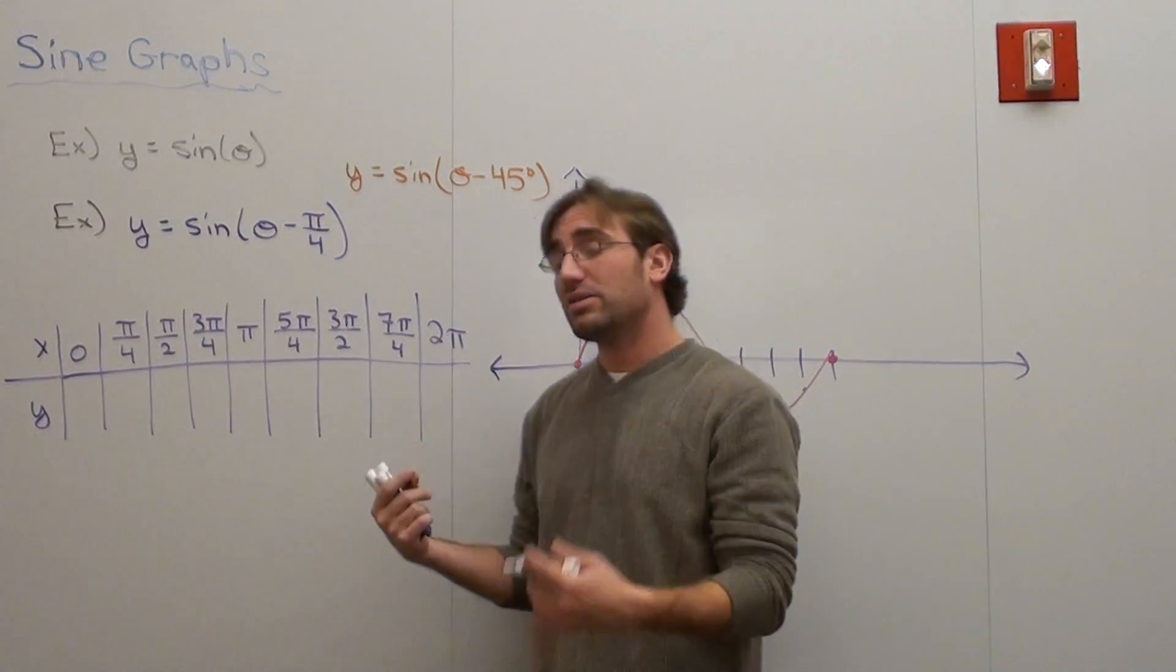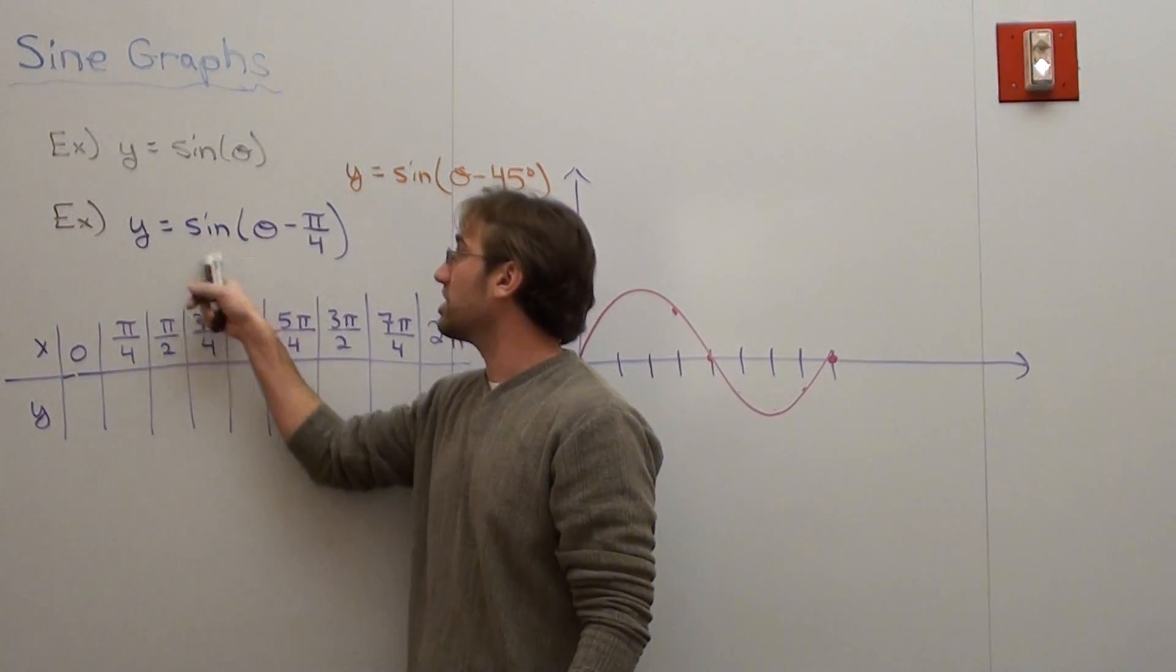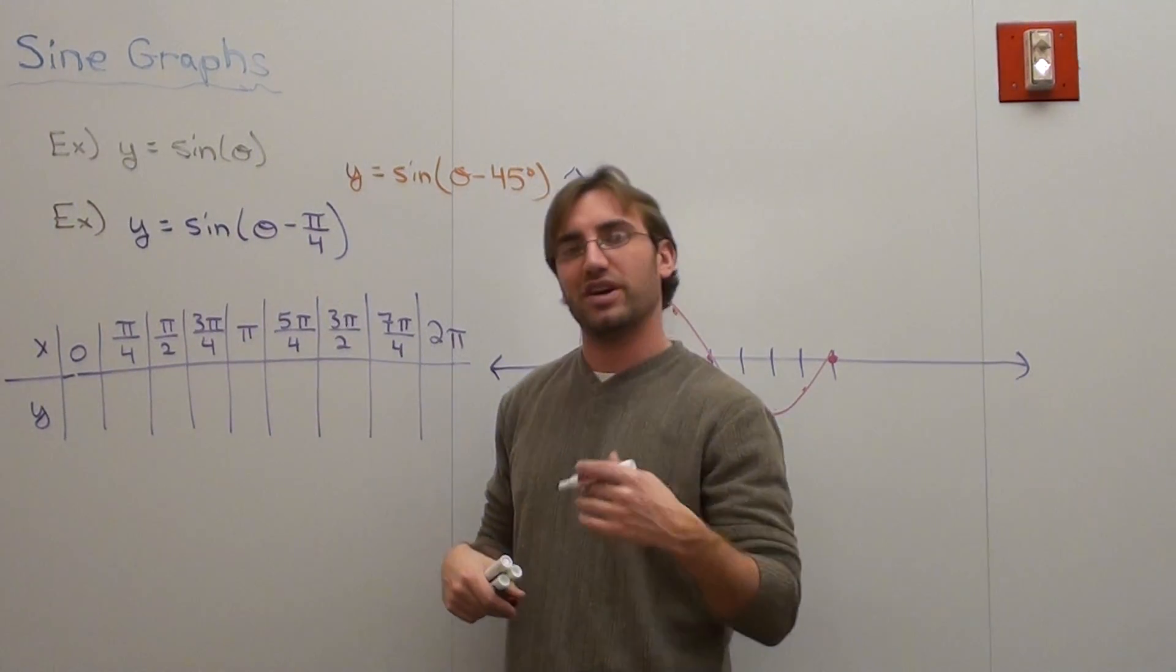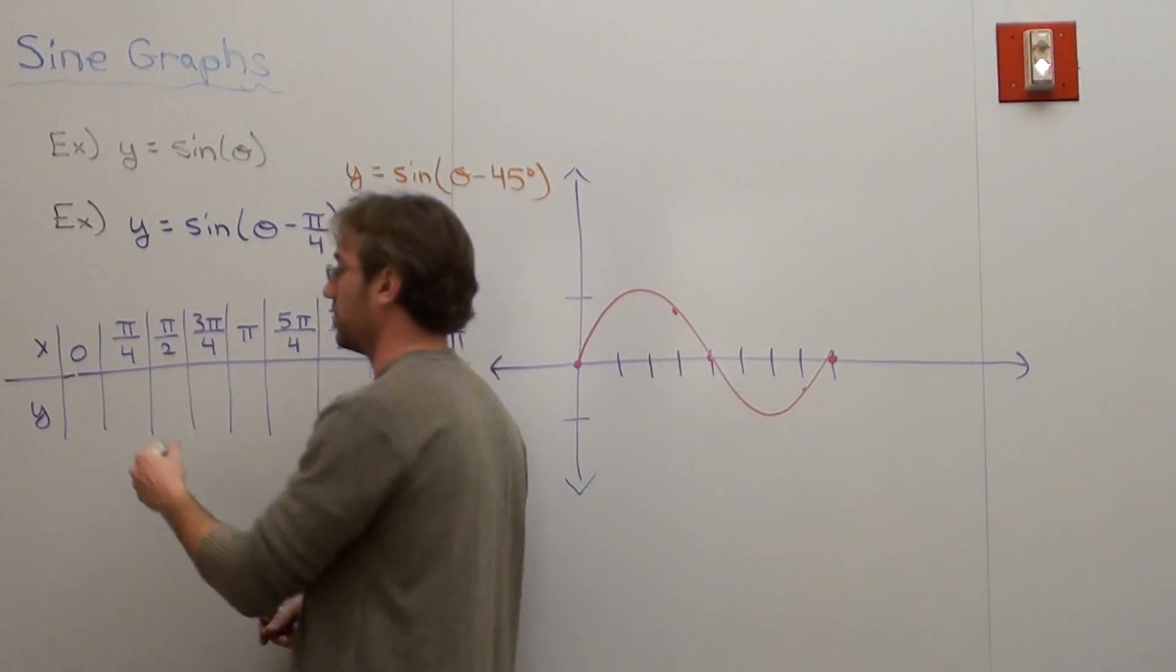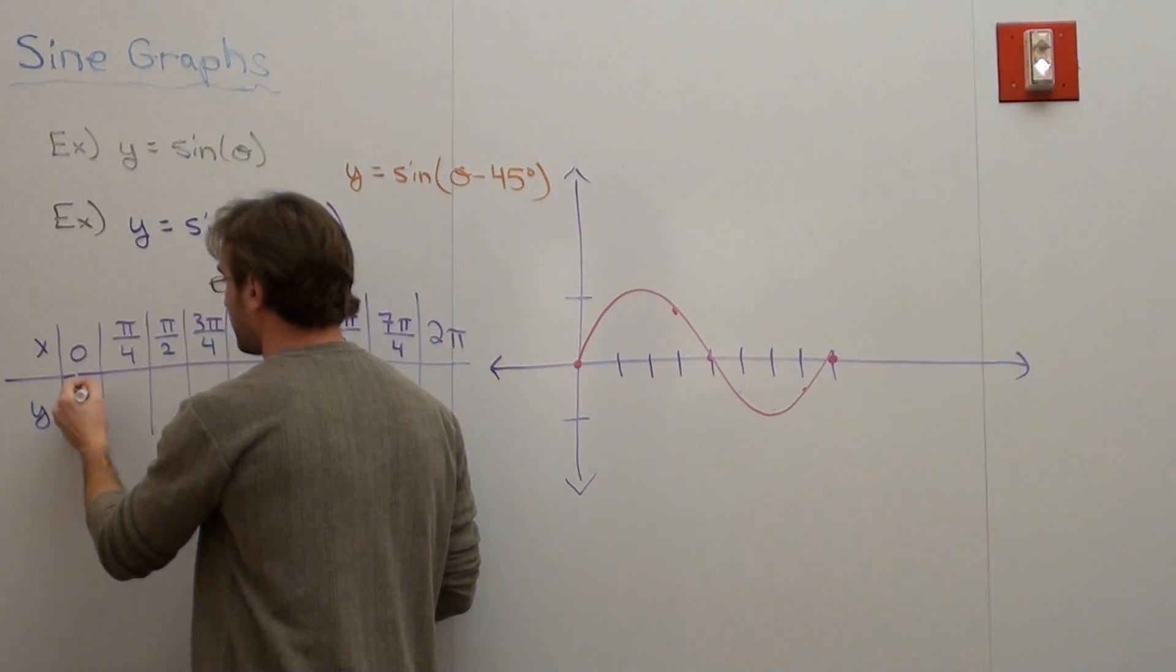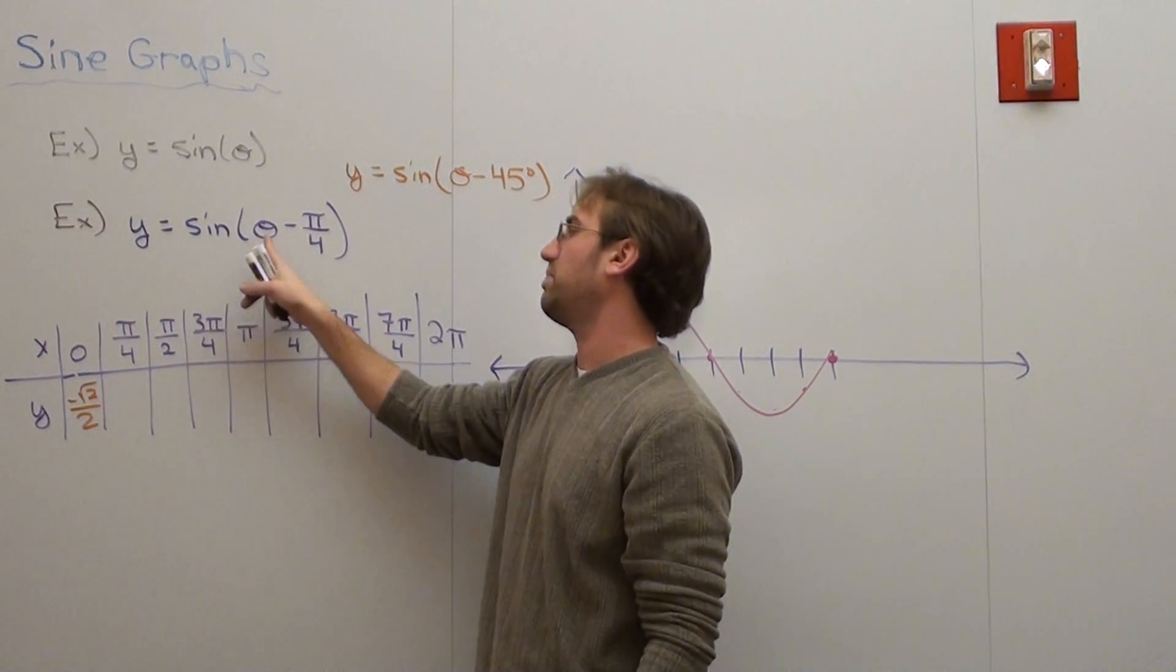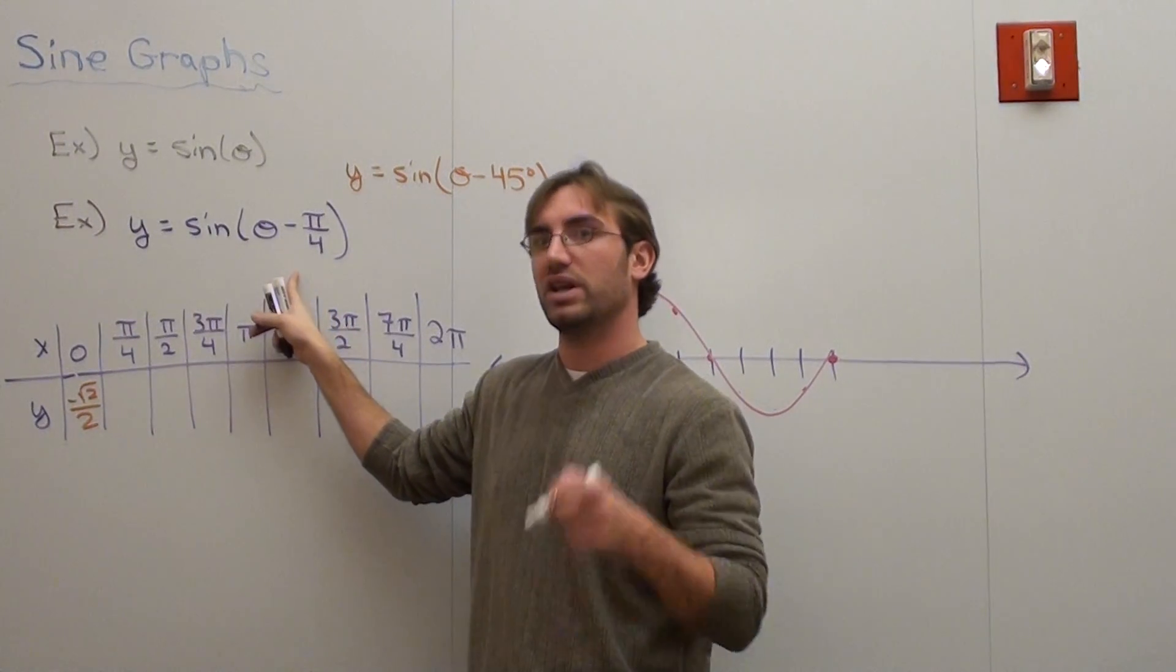This is a little bit more difficult, though, because when I put in zero, it's not actually the sine of zero anymore. It's zero minus 45 degrees, or the sine of negative 45 degrees, or the sine of 315 degrees. The sine of 315 degrees is negative root 2 over 2. So we can't just use that little trick we had. If we put in pi over 4, that's pi over 4 minus pi over 4, which is zero. Sine of zero is zero.